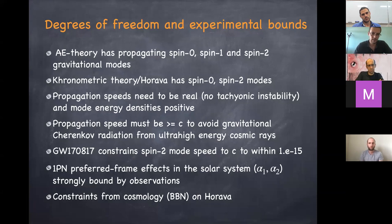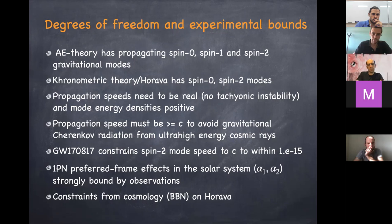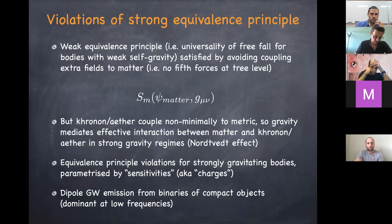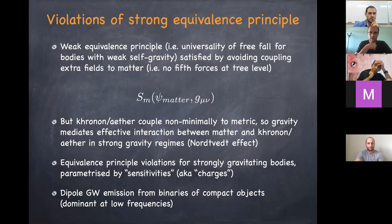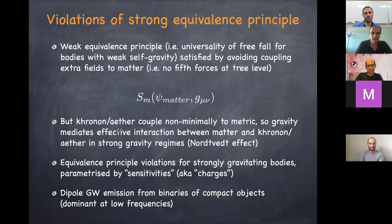Additional constraints come from solar system tests, cosmology, and in particular Big Bang nucleosynthesis. There are also constraints from binary pulsars. In general, when you have Lorentz violations in gravity, you also expect violations of the strong equivalence principle — the universality of free fall for strongly gravitating compact objects such as black holes and neutron stars.